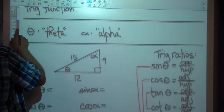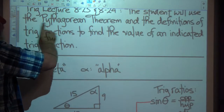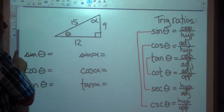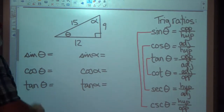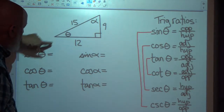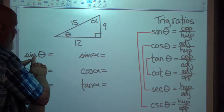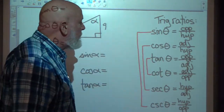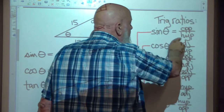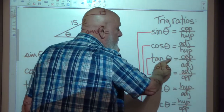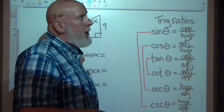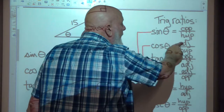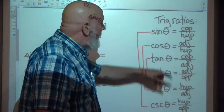We're going to use the definitions of trig functions to find the value of an indicated trig function. For example, the sine of theta is opposite over hypotenuse. As a reminder: sine of theta is opposite over hypotenuse, cosine of theta is adjacent over hypotenuse, and tangent of theta is opposite over adjacent. A lot of people remember it as SOH-CAH-TOA.